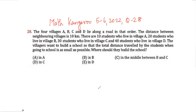Question 28 reads as follows: the four villages A, B, C, D lie along the road in that order. The distance between neighboring villages is 10 kilometers. There are 10 students who live in village A, 20 students in village B, 30 students in village C, and 40 students in village D. The villages want to build a school so that the total distance traveled by the students when going to school is as small as possible. Where should they build the school?